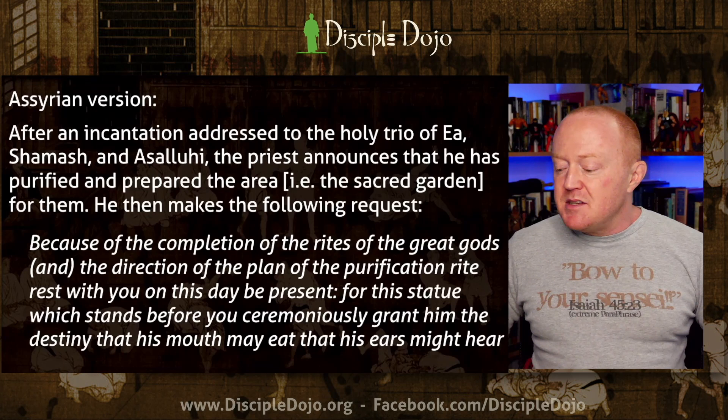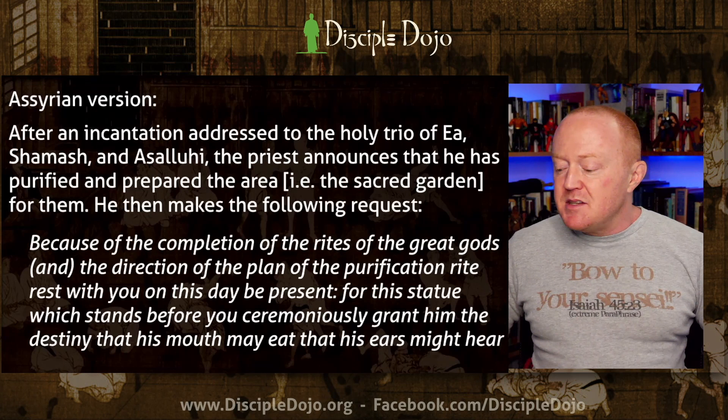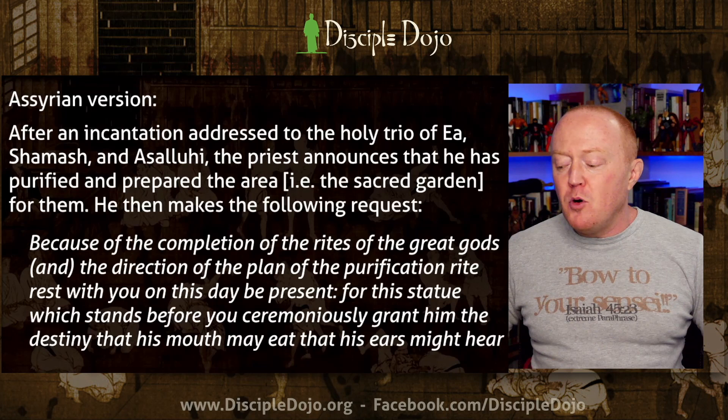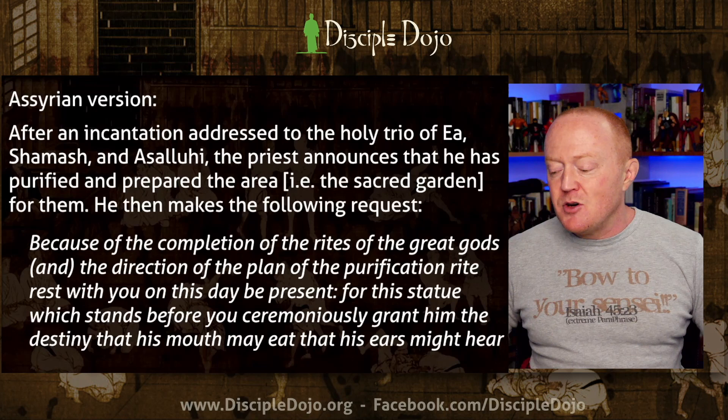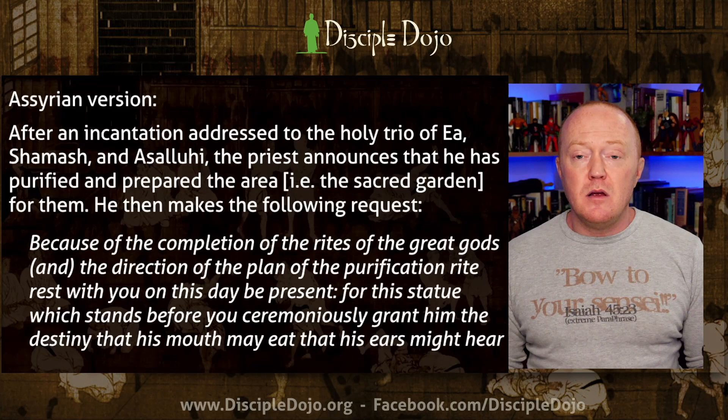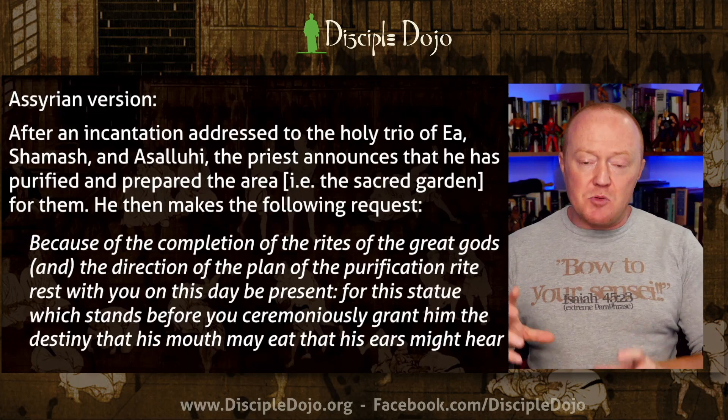The priest then makes this request: 'Because of the completion of the rights of the great gods and the direction of the plan of the purification right, rest with you on this day. Be present for this statue which stands before you. Ceremoniously grant him the destiny, that his mouth may eat, that his ears might hear.' This ceremony would take place within the royal garden and was believed to bring the image to life — not literally, but theologically, so that prayers to the image were heard by the god.